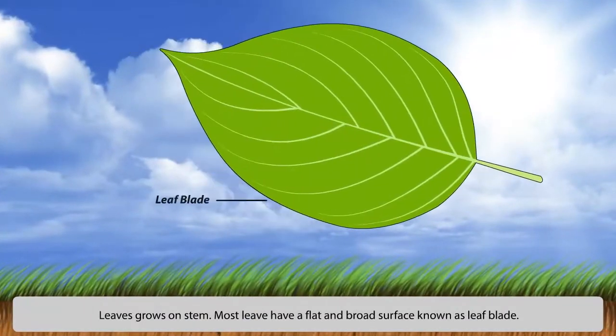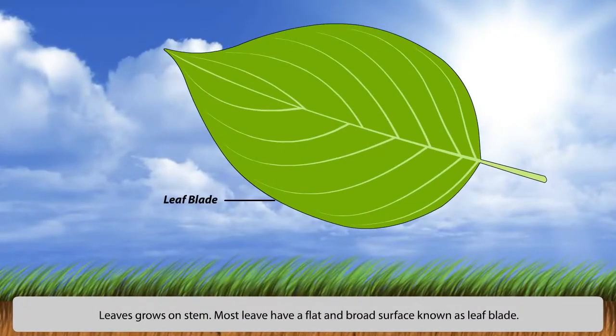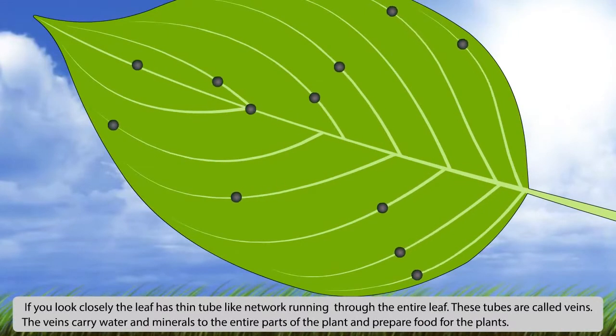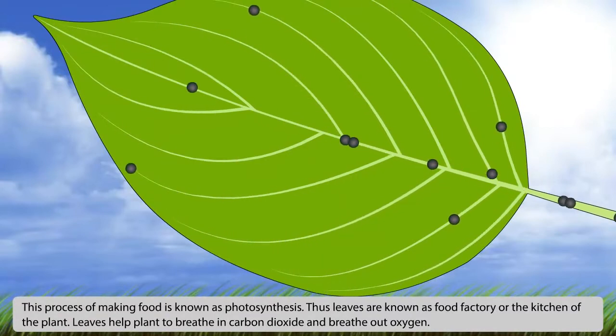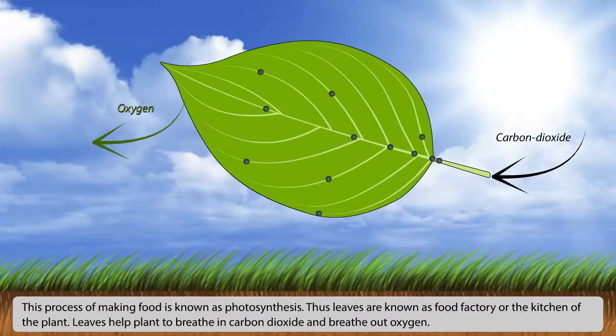Leaves grow on the stem. Most leaves have a flat and broad surface known as a leaf blade. If you look closely, the leaf has thin tube-like networks running through the entire leaf. These tubes are called veins. The veins carry water and minerals to the entire parts of the plant and prepare food for the plant. This process of making food is known as photosynthesis.